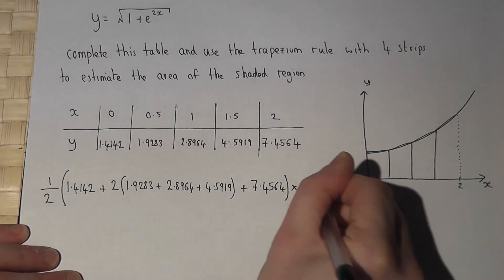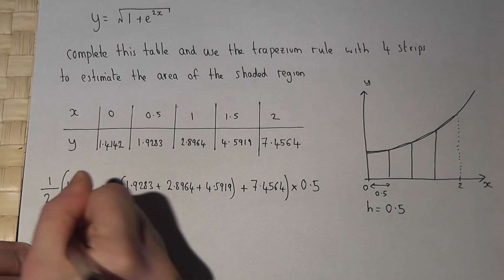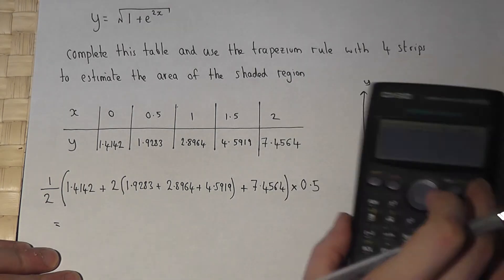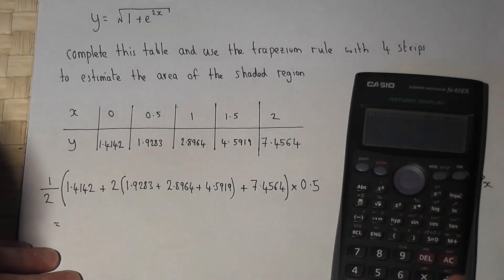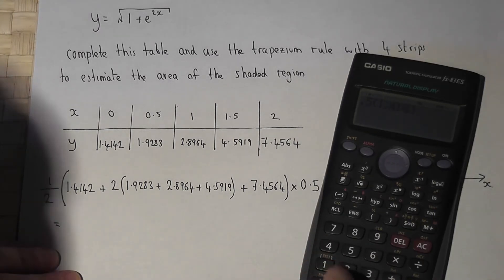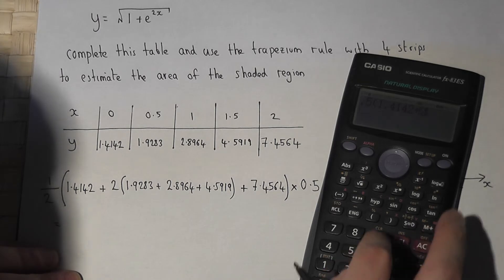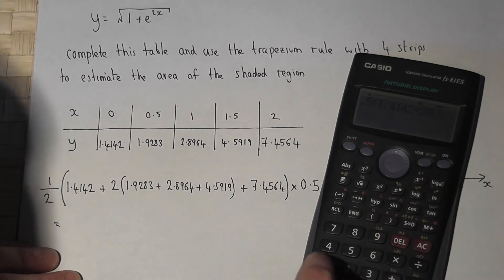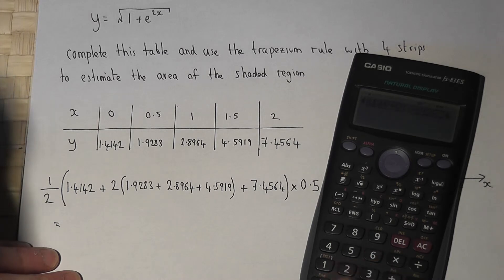So on my calculator I just have to work out this entire calculation. So 0.5 bracket 1.4142 plus two lots of open bracket 1.9283 plus 2.8964 plus 4.5919 close bracket plus 7.4564 close bracket times 0.5.